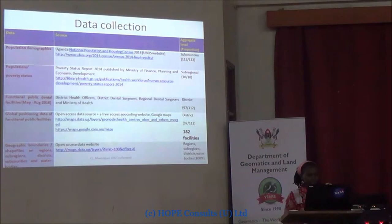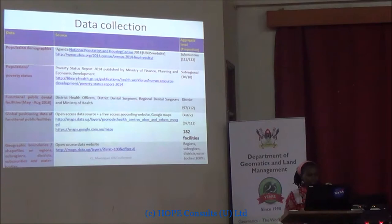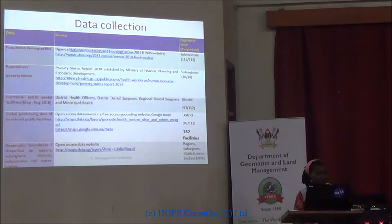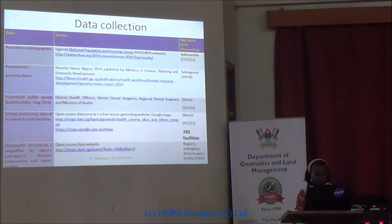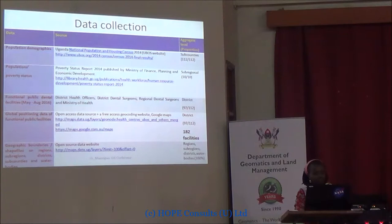Data sources included the national population and housing census of 2014 and the Poverty Status Report. Information on the function of public dental facilities was obtained from district health managers as well as from the Ministry of Health. Global positioning data was from open sources as well as Google Maps — where it was not clear where some facilities were located, I used Google Maps to get the exact locations. Data was collected in 2016: we had 114 districts, and information was collected in 97 out of 112, with 182 facilities contributing to the study.